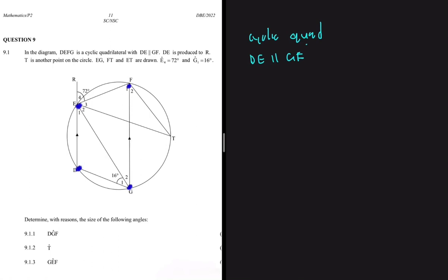What do you mean by some basics? Angles on a straight line, angles obtained by the same chord, and so on. The first question, 9.1.1, says determine with reason the size of DGF.